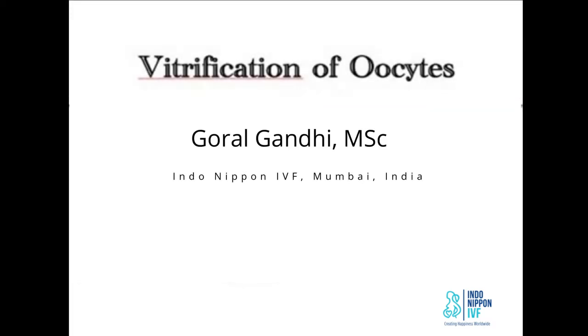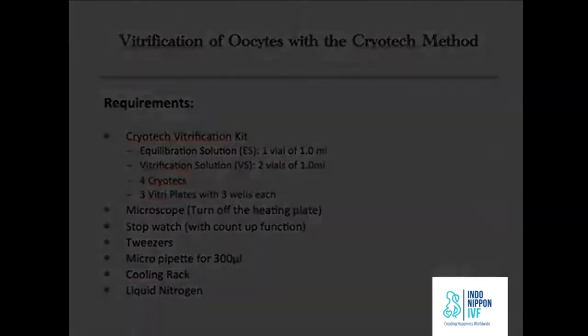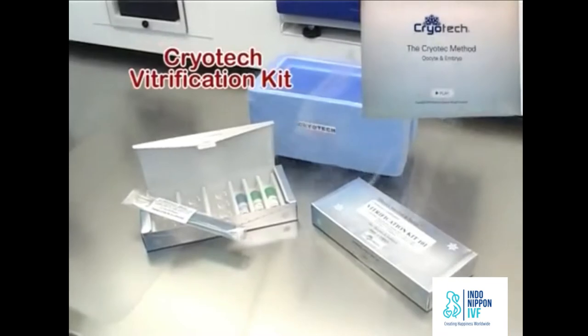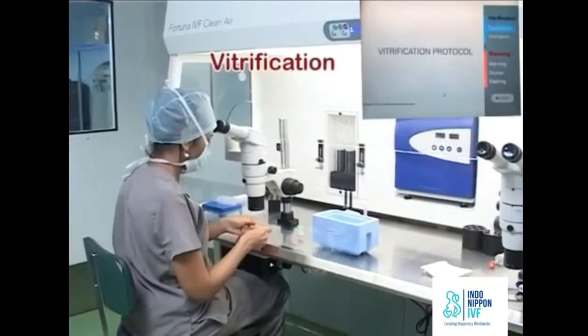Vitrification of oocytes using the Cryotech method. Before beginning the process, ensure that the microscope stage heating is turned off and the room temperature is around 25 to 27 degrees centigrade. Bring Equilibration Solution or ES and Vitrification Solution or VS vials to room temperature at least one hour before vitrification.